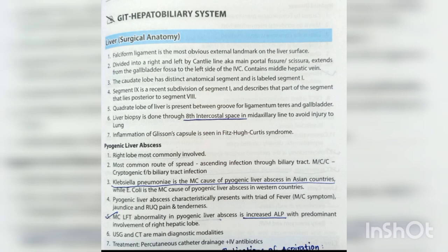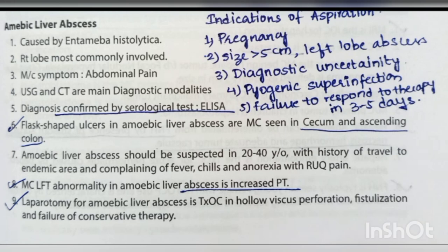Amoebic liver abscess is caused by Entamoeba histolytica; the right lobe is most commonly involved. Most common symptom is abdominal pain. USG and CT are the main diagnostic modalities; diagnosis is confirmed by serological test ELISA. Flask-shaped ulcers are most commonly seen in the cecum and ascending colon. Amoebic liver abscess should be suspected in 20–40 year olds with history of travel to an endemic area presenting with fever, chills, and right upper quadrant pain. Most common LFT abnormality is increased PT. Laparotomy is indicated in hollow viscus perforation, fistulization, and failure of conservative therapy. Indications for aspiration include pregnancy, size greater than 5 cm, left lobe abscess, diagnostic uncertainty, pyogenic superinfection, and failure to respond to therapy in 3–5 days.